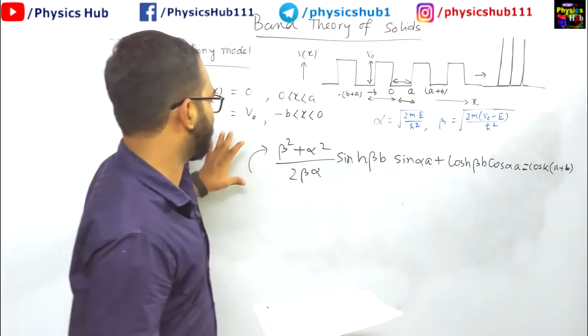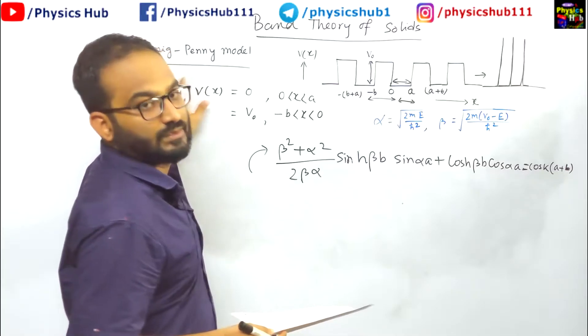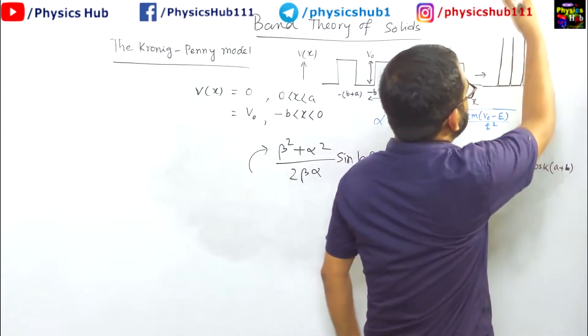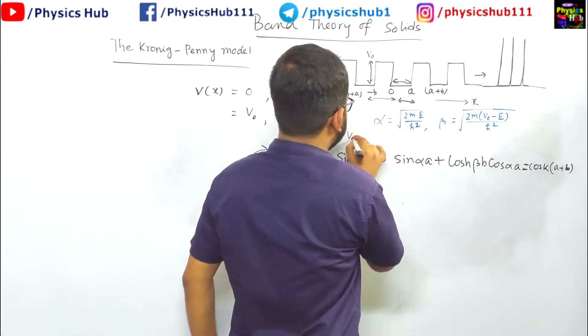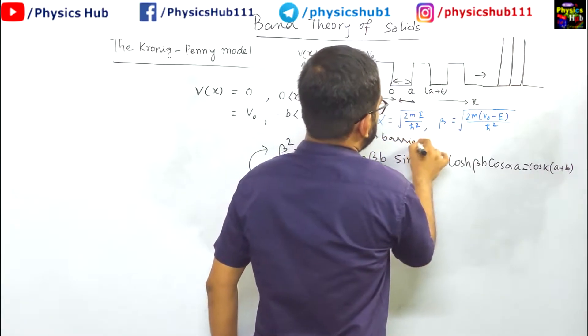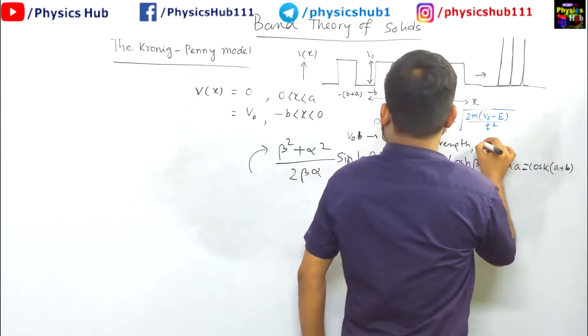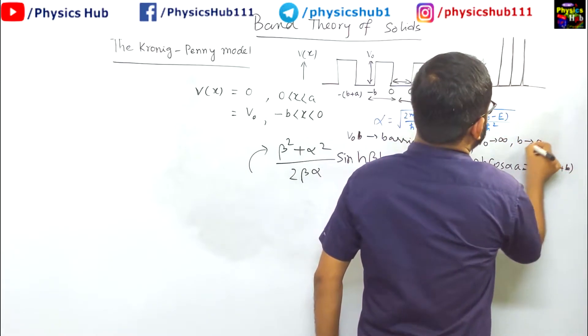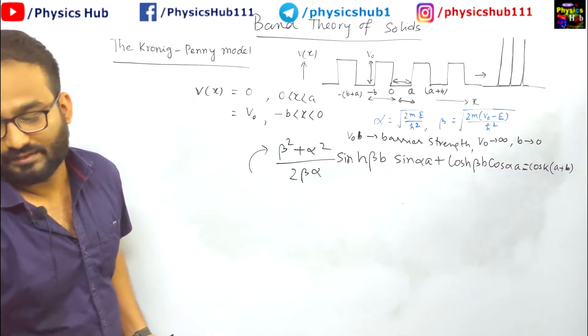Now this is the equation we last discussed, and as per Kronig and Penney, he took a special situation where this potential took the form of Dirac delta function. He defined a quantity v naught into b which was known as barrier strength, with an approximation that v naught is tending to infinity and b tending to zero. Under this approximation, what kind of change can we expect here?